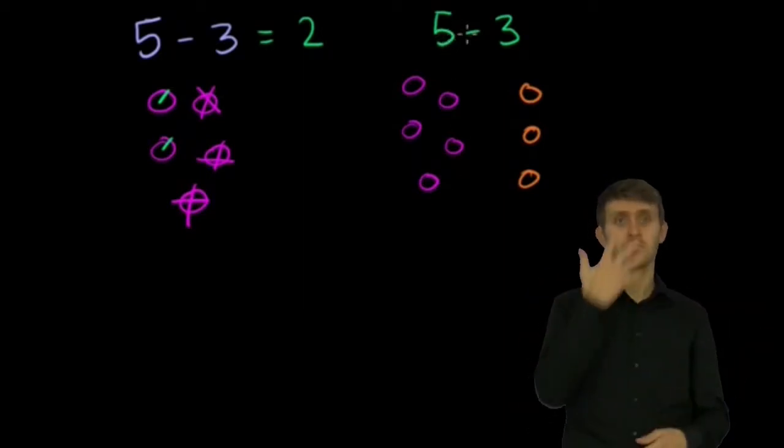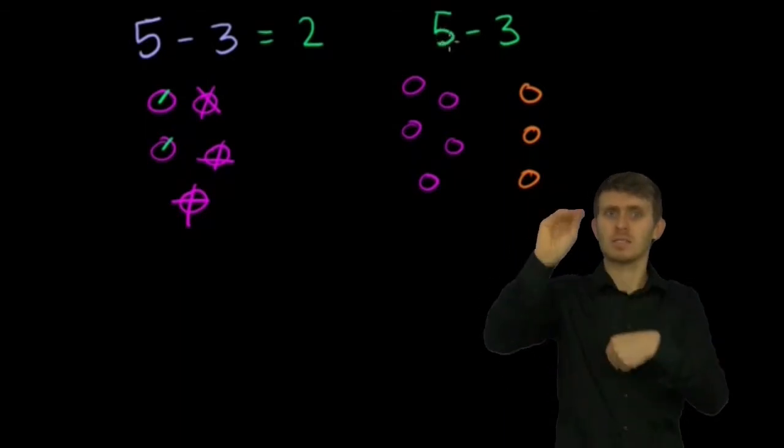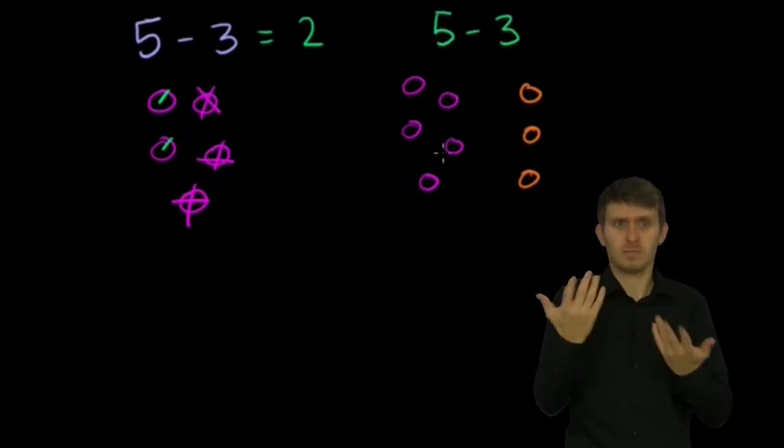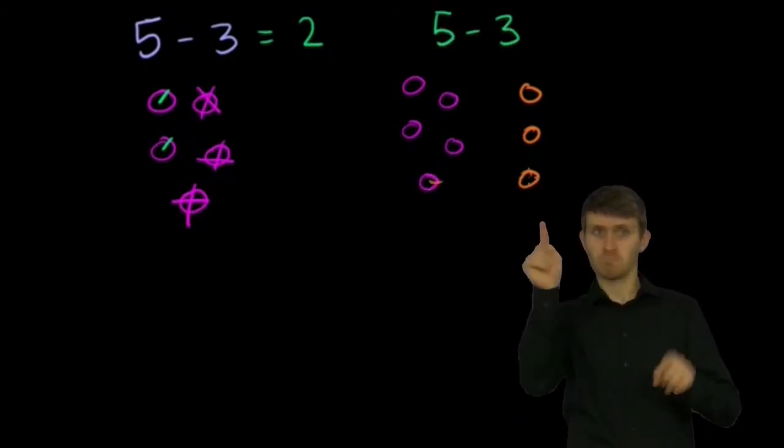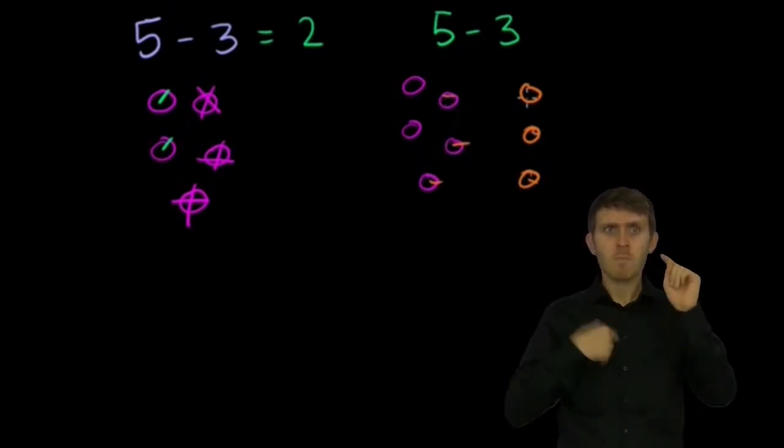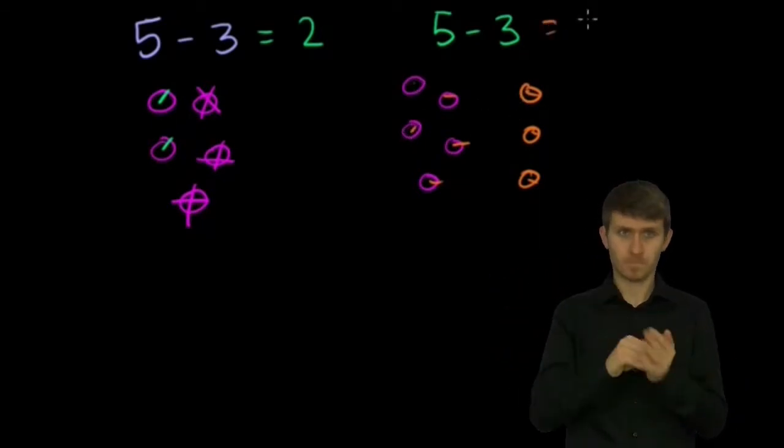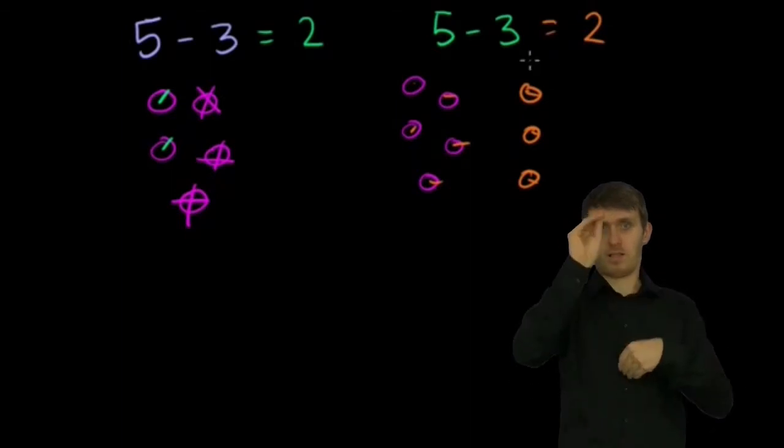So another way to think about 5 minus 3 is, how many more berries do I have than you have? And if you look right here, well, you see, this berry, you have also 1 berry there. We both have 1 berry there. But I've got 1, 2 berries that you don't have. So once again, I have 2 more berries than you have.